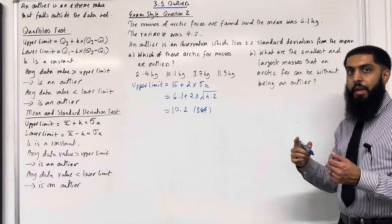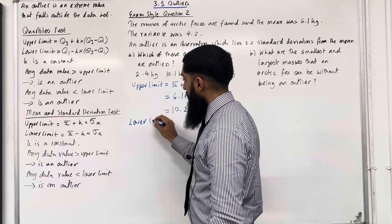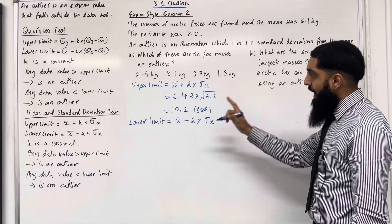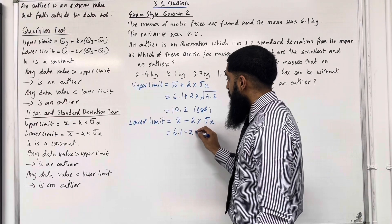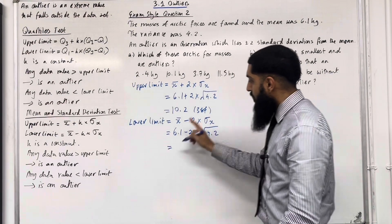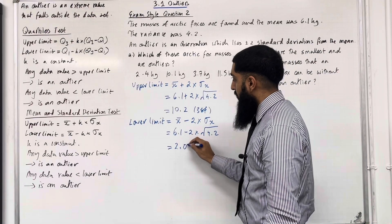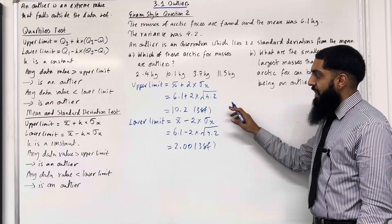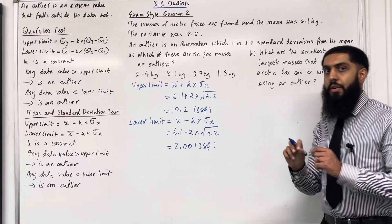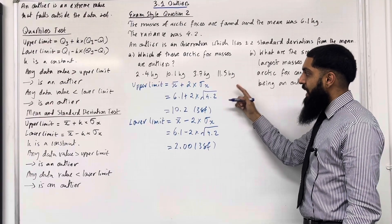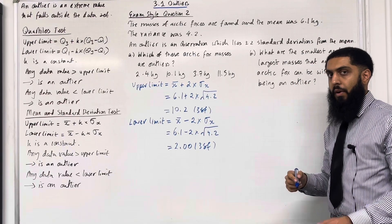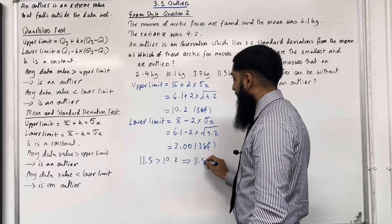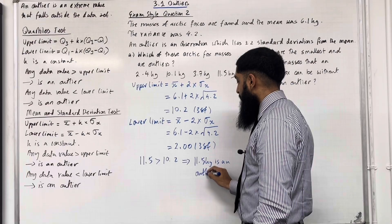The lower limit is the mean x-bar minus 2 lots of the standard deviation sigma x: 6.1 minus 2 times the square root of 4.2, giving 2.00 to 3 significant figures. Now 2.4, 10.1, and 3.7 are all between 2.00 and 10.2, so the first three data values are not outliers. However, 11.5 kg is greater than 10.2, which implies that 11.5 kg is an outlier. This completes part A of exam style question 2.